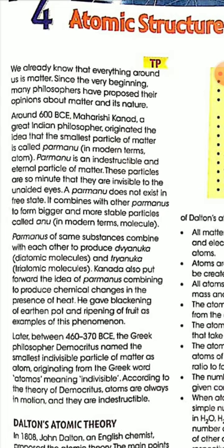Later, between 462 to 370 BCE, the Greek philosopher Democritus named the smallest individual particle of matter as atom, originating from the Greek word 'atomos' meaning indivisible. According to the theory of Democritus, atoms are always in motion and they are indestructible.